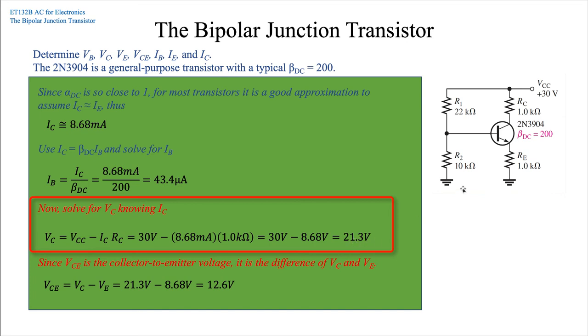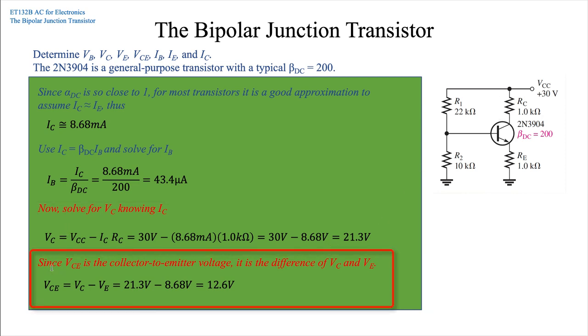The last step: since VCE is the collector-to-emitter voltage, it's the difference of VC and VE, the difference in the collector voltage and the emitter voltage. So the collector-to-emitter voltage is V collector minus V emitter: 21.3 volts minus 8.68 volts gives us 12.6 volts for the collector-to-emitter voltage.